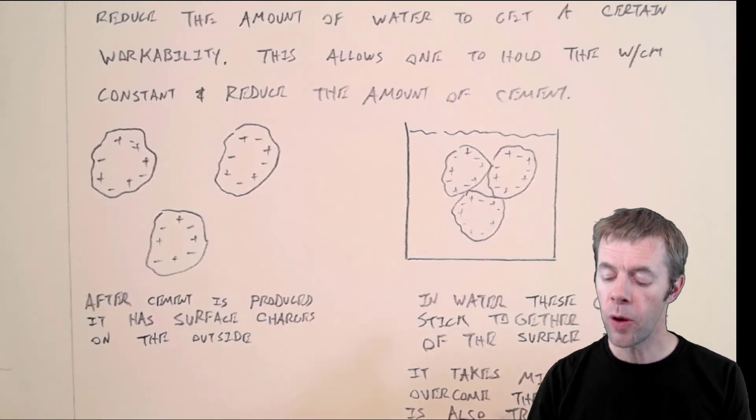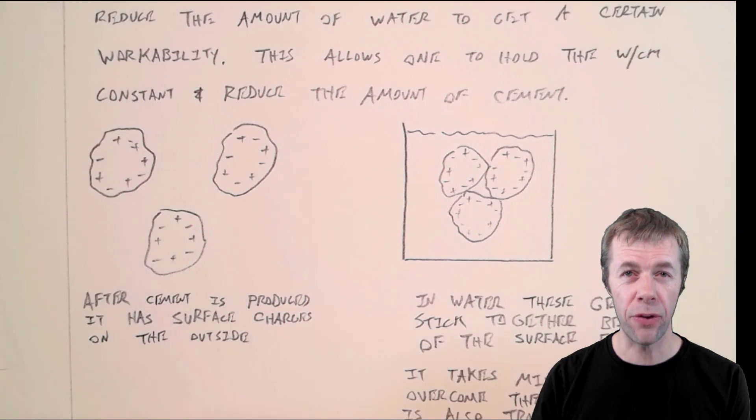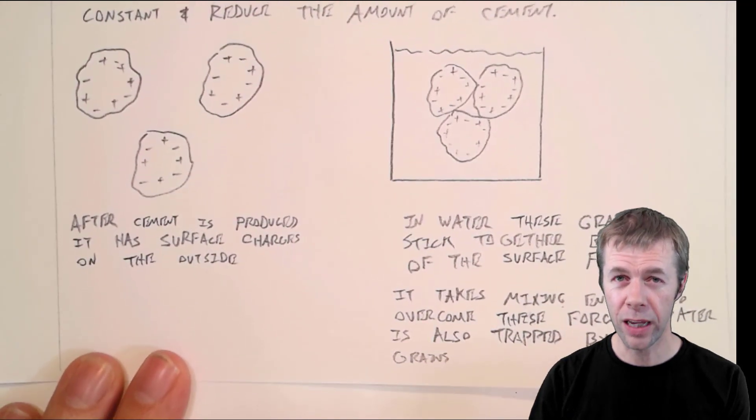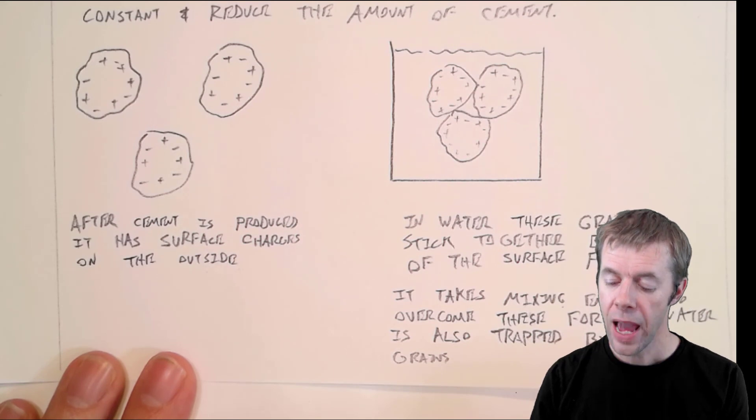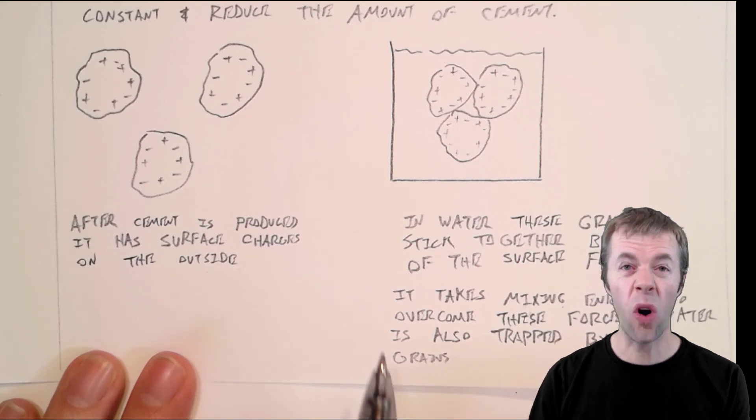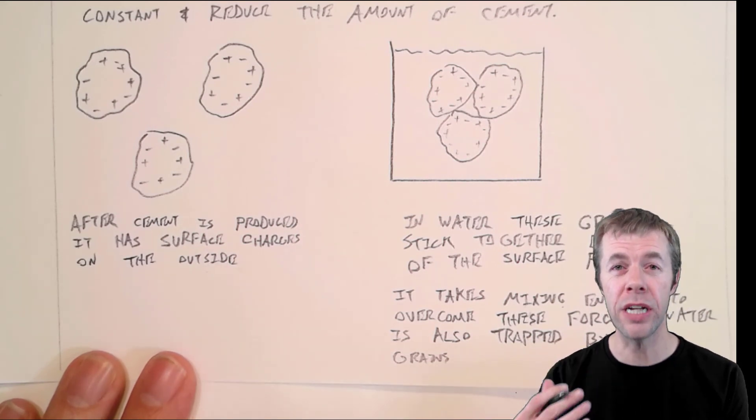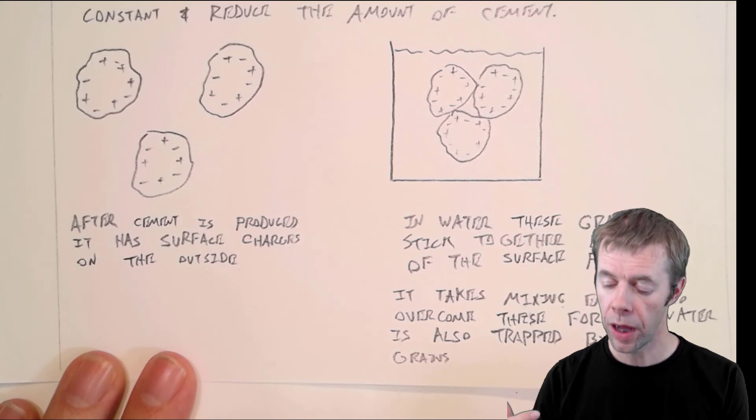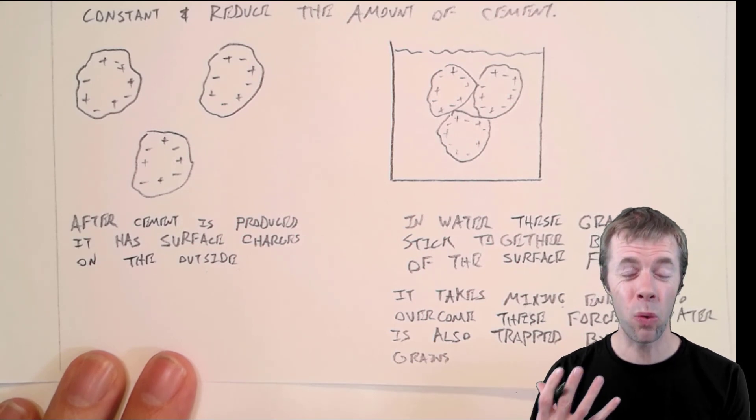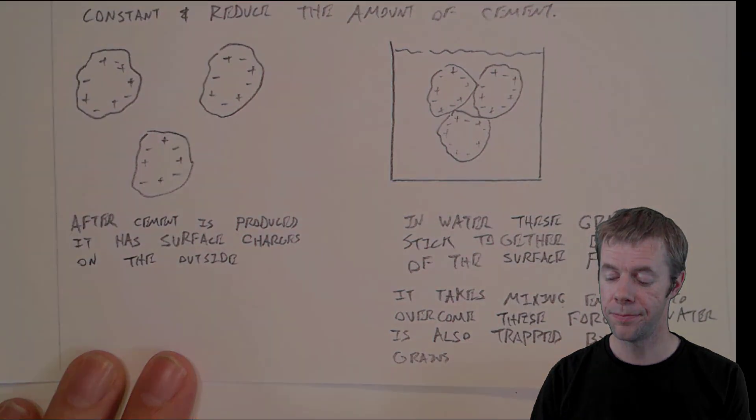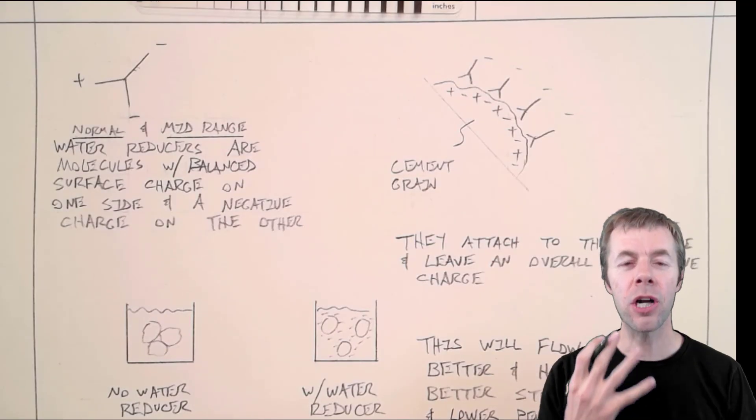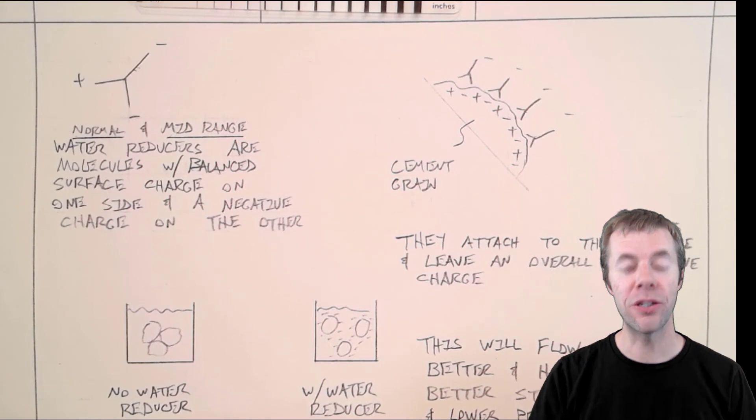One thing they can do is hold the water-cement ratio constant and reduce the amount of cement. Or you can reduce the water content for the same amount of cement to get a lower water-cement ratio. Cement grains have an overall charge on them, and when you put them in water, they clump together. They flock or clump, and this makes it harder to mix.